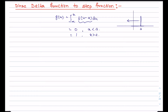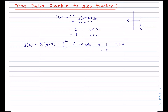So g(x) equals the Heaviside step function theta(x minus a), which equals the integration from minus infinity to x of delta(u minus a) du. This takes the value one for x greater than a and zero for x less than a. This is how you can represent a step function through the integral of the Dirac delta function.